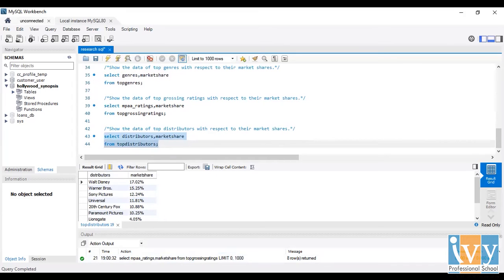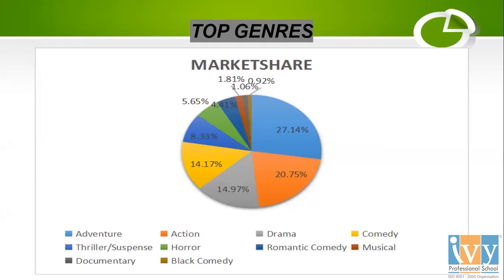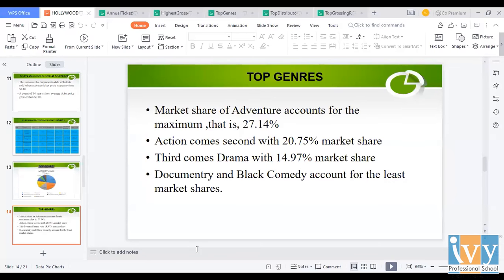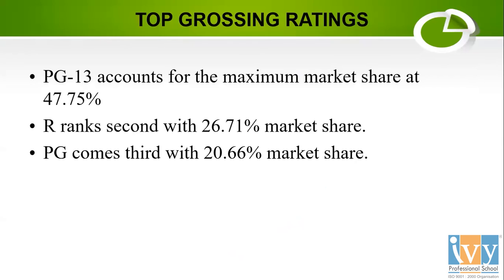Now I'm going to show the findings in the form of charts. My first pie chart is the top genres pie chart, which shows the distribution of market shares. We see that adventure accounts for the maximum market share at 27.14%. Action comes second. Drama comes third with 14.97% market share. Documentary and black comedy account for the least market shares. Moving on to top grossing ratings, the pie chart shows PG-13 accounts for the maximum market share at 47.75%. R is ranked second, and PG comes third with 20.6% market share.